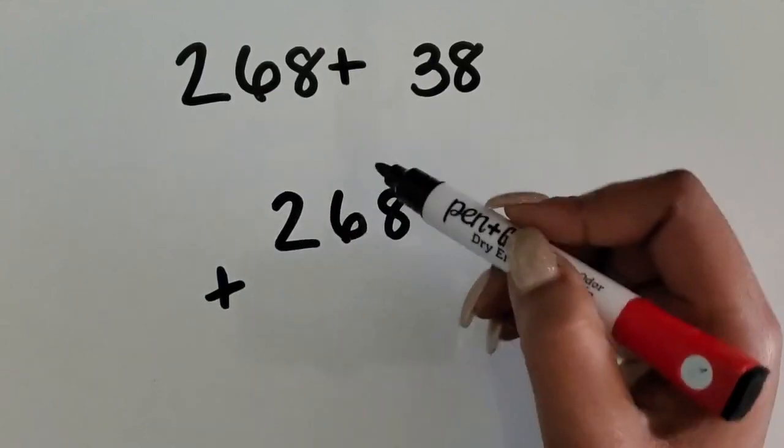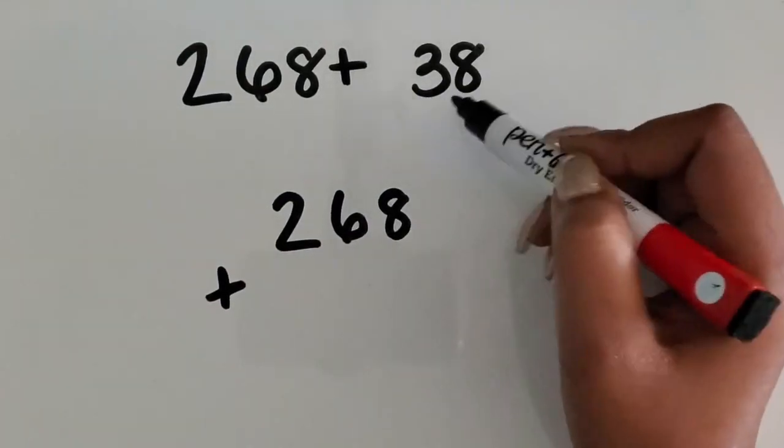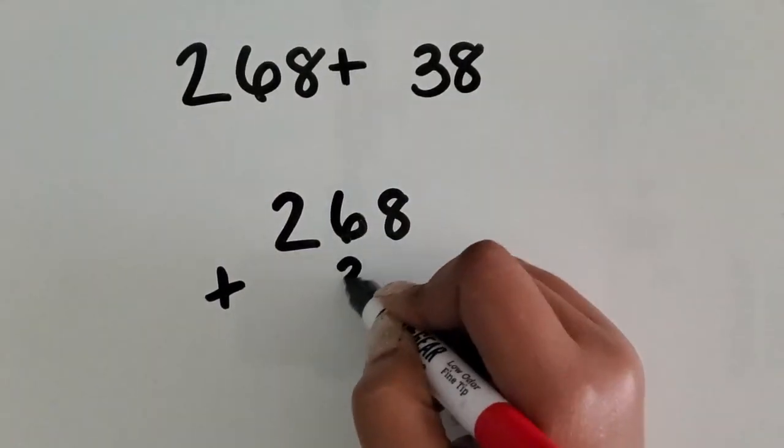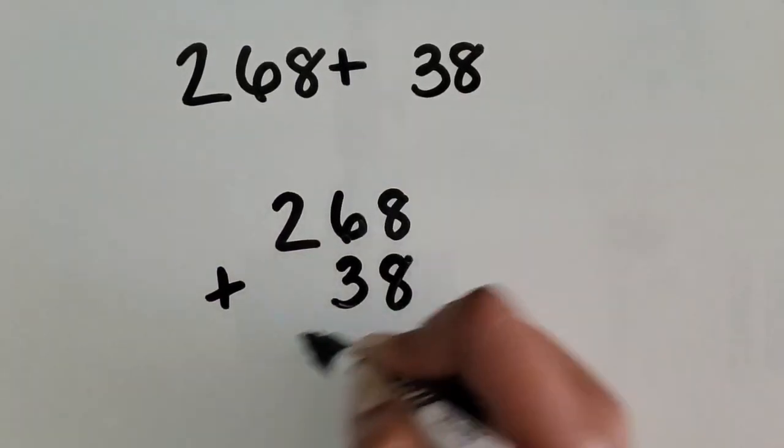So I have the two in the hundreds place, the six in the tens place, and the eight in the ones place. 38 only has tens and ones, so I'm going to line the three tens up in my tens place and the eight in the ones place.